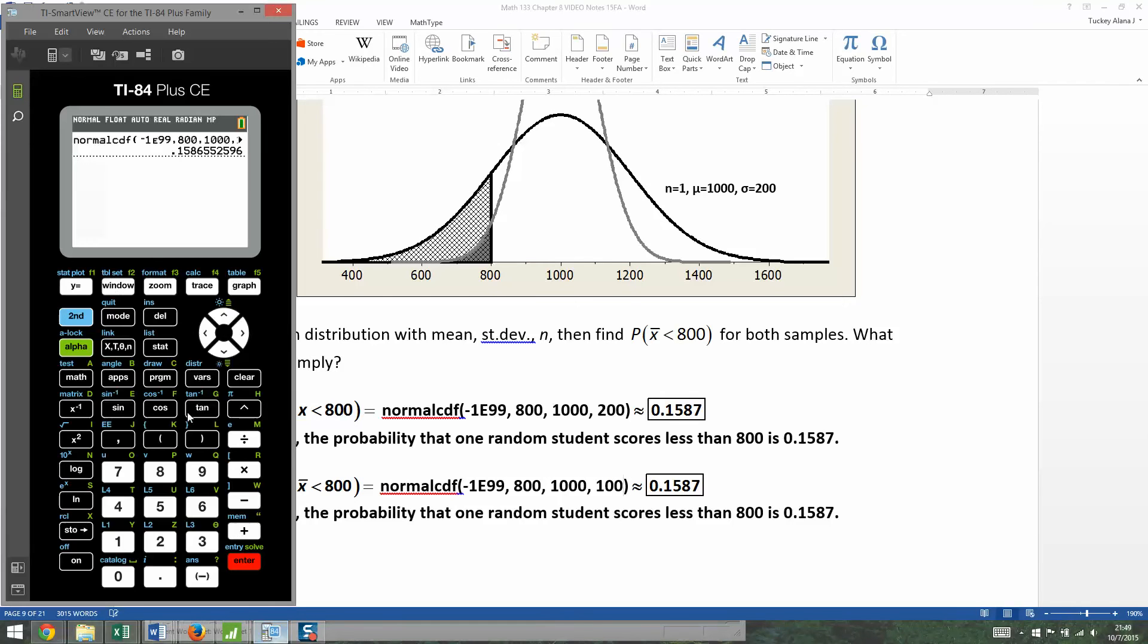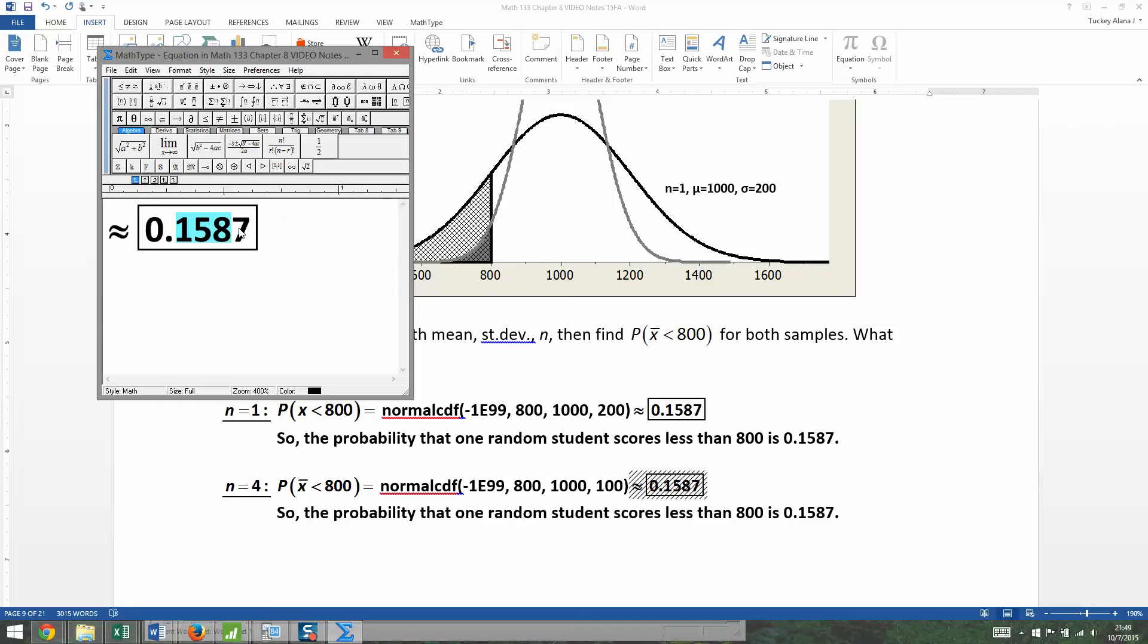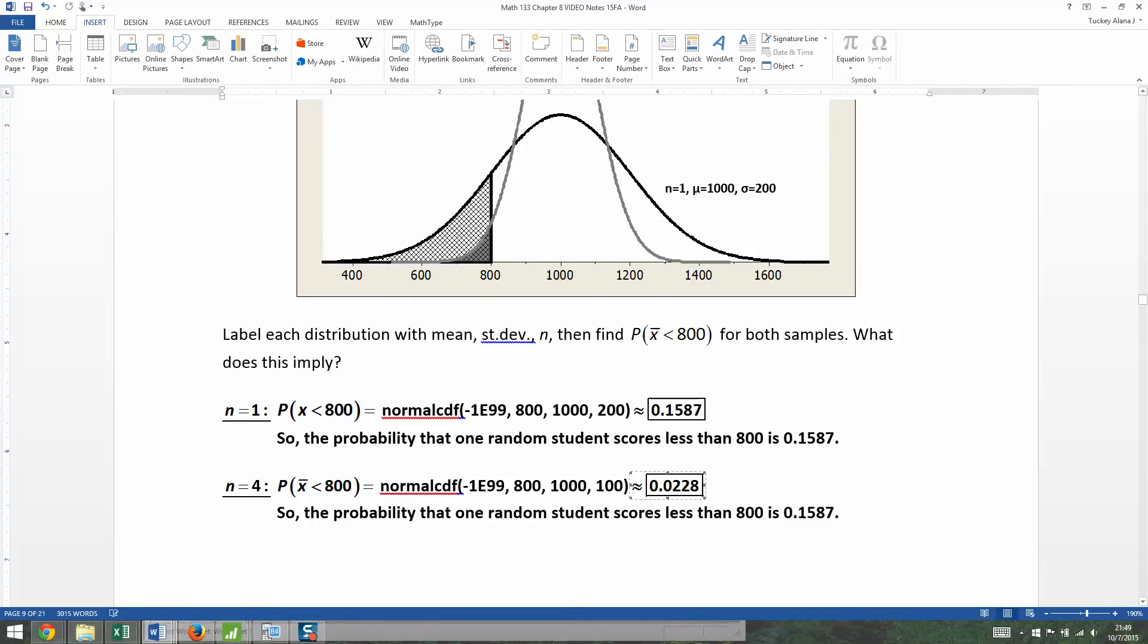That's going to mean that our result's going to be different. So I go back to distributions, pick number two, and then instead of 200, I'm going to put 100. Enter and paste. I get 0.0228. That's a different thing. It means that the probability that a random group of four students has an average, a sample mean less than 800 is 0.0228.